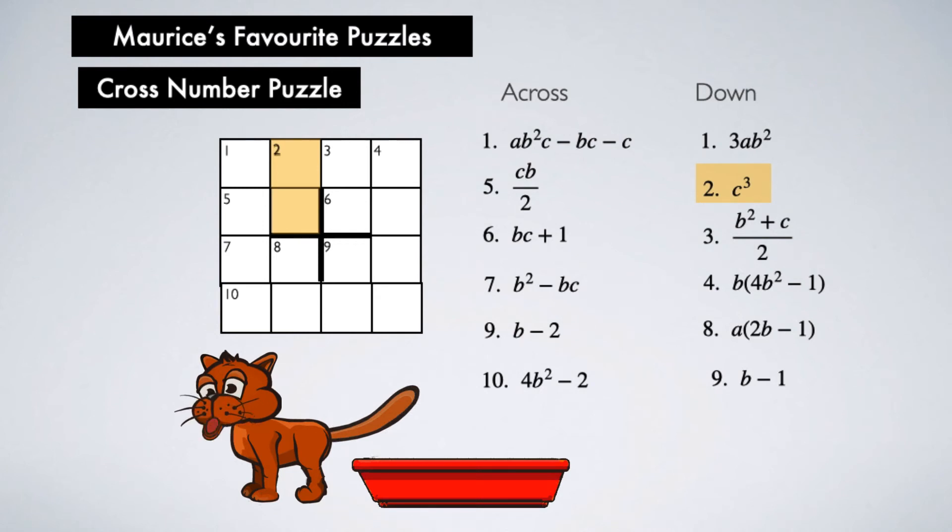whose cubes are two digits: 3³ is 27 and 4³ is 64. So c must be either 3 or 4. The next clues I would look at are 9 across, 9 down, and 7 across.